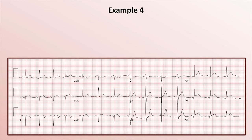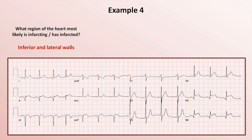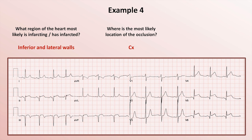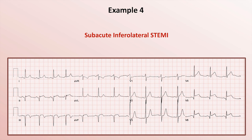In example 4, we see ST elevations in 2, 3, and AVF as well as in V5 and V6, so both the inferior and lateral walls are involved. Unlike prior examples where we couldn't localize the inferior wall occlusion to a single vascular territory, the combination of inferior with lateral involvement makes it highly probable that this patient has a circumflex occlusion in a left dominant circulation. We again see both Q-waves and ST elevations in the inferior leads, meaning the infarct is hours to days old. Summary: this is a subacute inferolateral STEMI.